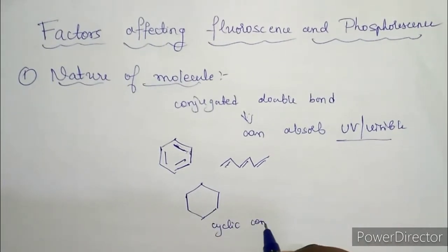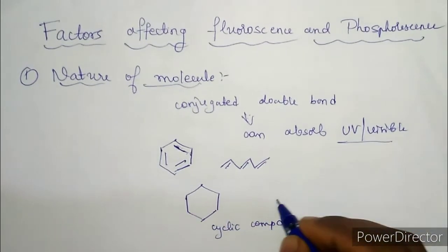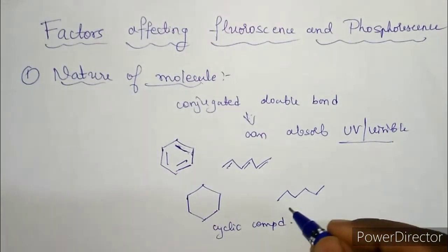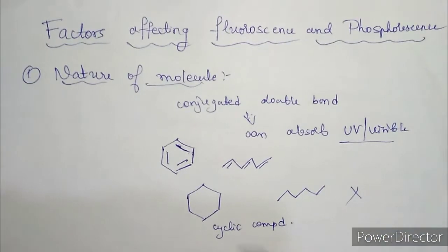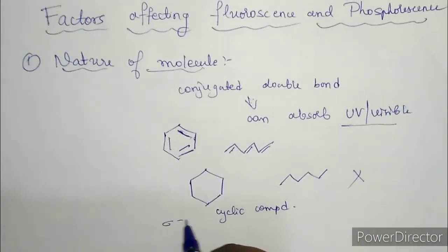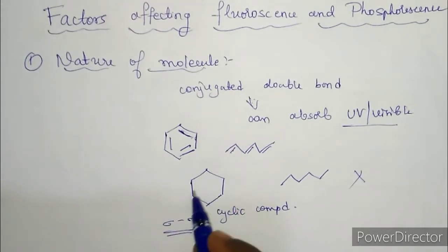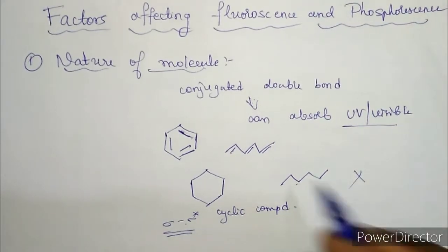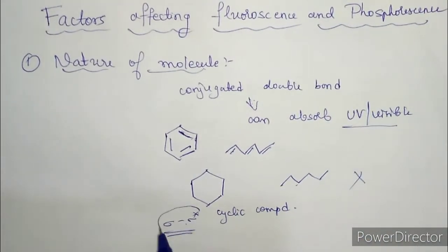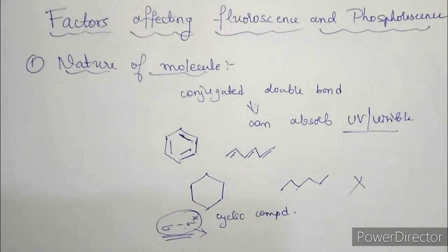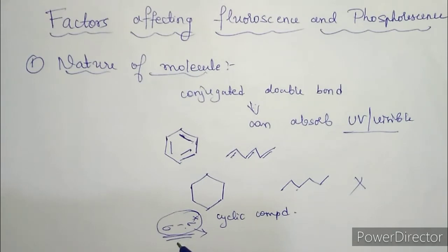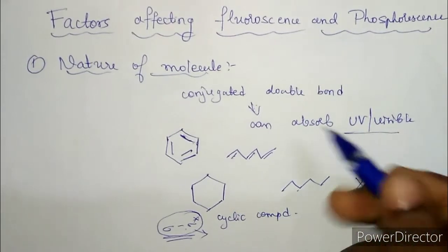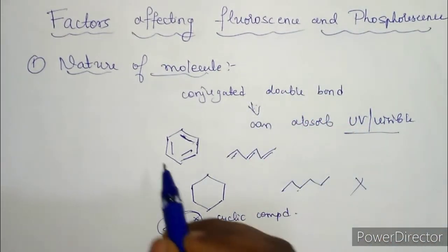However, if you consider a simple cyclic compound like cyclohexane, or some alkyl compounds not having any pi bonds — only sigma bonds — these compounds cannot show fluorescence and phosphorescence. In such compounds we can only have sigma to sigma star transitions, and the energy required for this transition is very high, which is why these compounds cannot absorb UV or visible radiation.